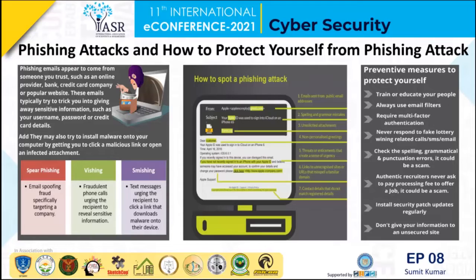There are 12 types of phishing, but here I will discuss only three. First, spear phishing: spear phishing is an email or electronic communication scam targeted toward a specific individual, organization, or business. The criminal may also intend to install malware on a targeted user's computer. The question is: how do you spot a phishing email?